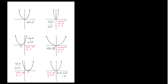Here are the examples: f of 2x, that is (2x) squared, is a horizontal shrink by 1 half. f of x plus 2, that is (x + 2) squared, moves to the left by 2 units. x minus 2 squared shifts to the right by 2. f of negative x is the same as x squared — it gives the same graph. And f of x over 2 gives a horizontal stretch by 2 units.